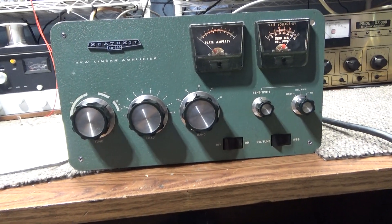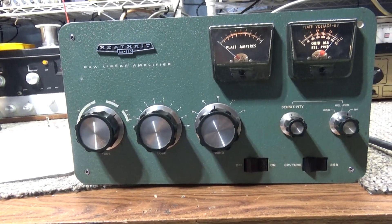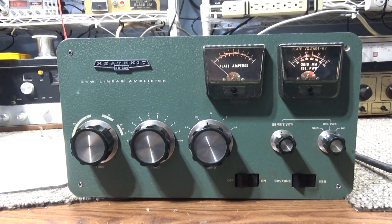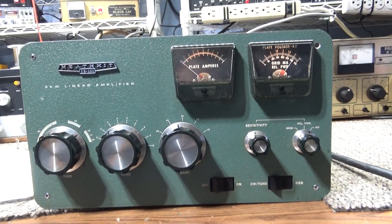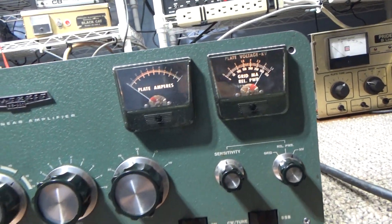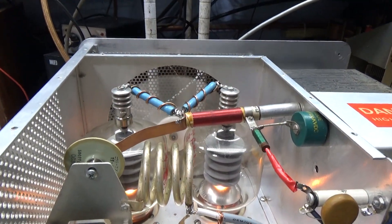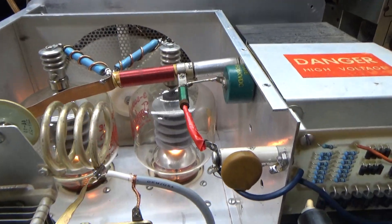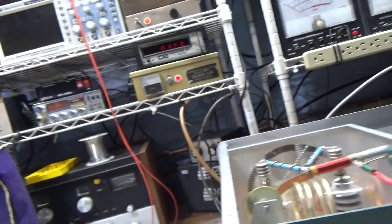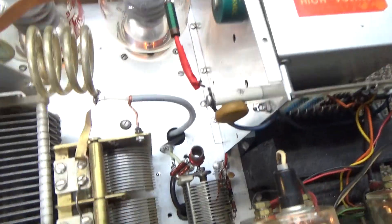Alright, doing one of these Heathkit SB220s on the bench. This time it's warming up. This one has been mono-banded, it's got 10 meters in and only. There goes my four turns of coil.